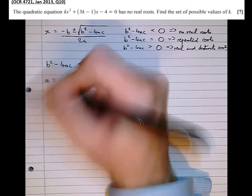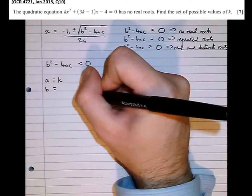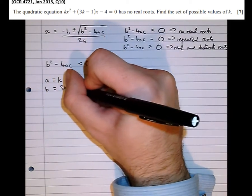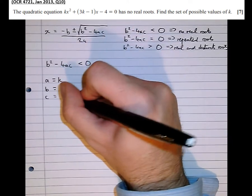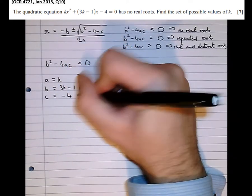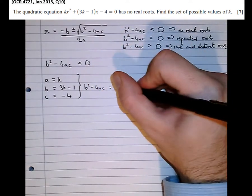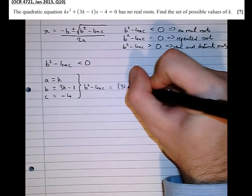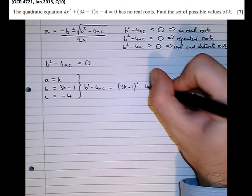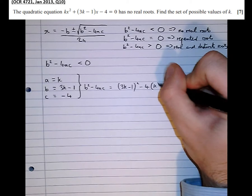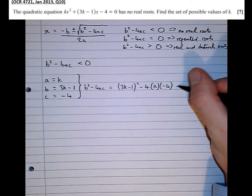Well in this case a, the number in front of x squared, is k. b, the number in front of x, is 3k minus 1. And c is the number on its own which we see is minus 4. So let's find the discriminant. b squared minus 4ac equals 3k minus 1 squared minus 4ac which we know is less than zero.